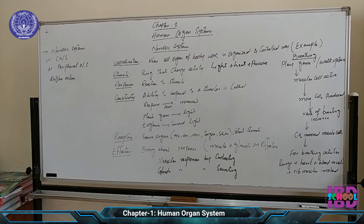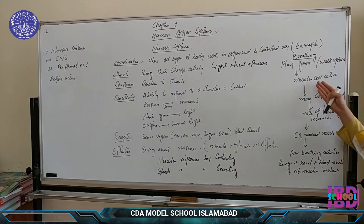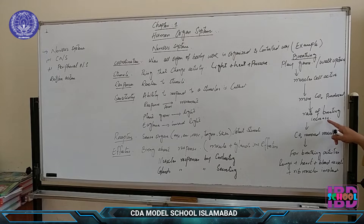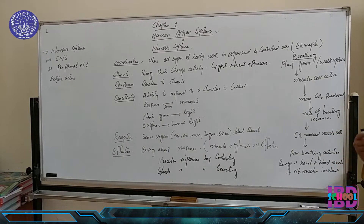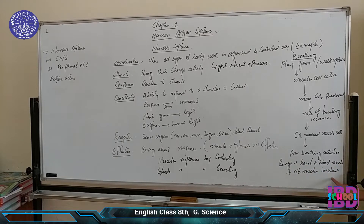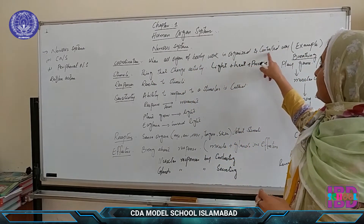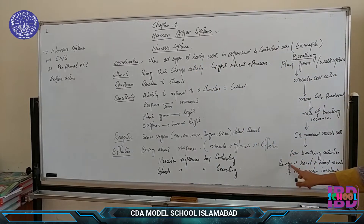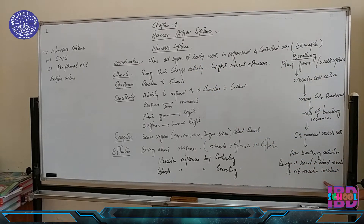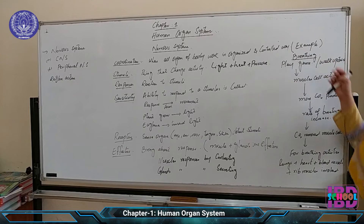The example is breathing. When you are playing a game or walking upstairs, your muscles become active. When muscles become active, more carbon dioxide is produced and the rate of breathing increases — you inhale oxygen and exhale carbon dioxide. Carbon dioxide is removed from the muscle cells. This means that for breathing activities, the lungs, heart, blood vessels, and rib muscles are all involved.